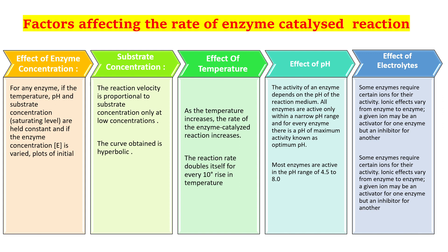The third factor is temperature. Theoretically, increasing temperature by every 10°C doubles the rate of reaction. However, this is valid only up to a certain limit. If temperature keeps increasing, enzymes — being proteins — will denature and the rate of reaction will drop to zero. The fourth factor is pH. All enzymes work only within a particular range of pH. If pH is increased or decreased beyond the optimum range, the protein will denature and enzyme activity will stop.